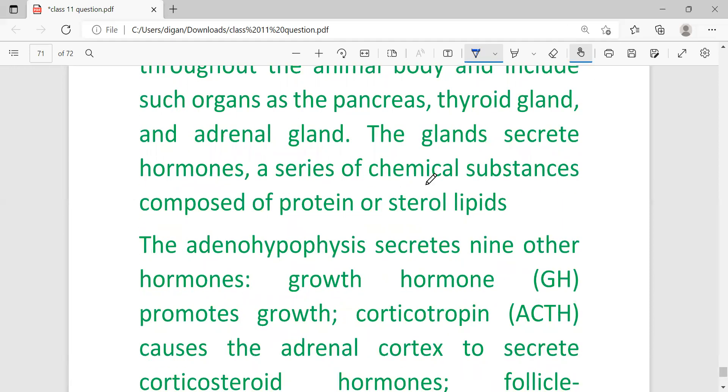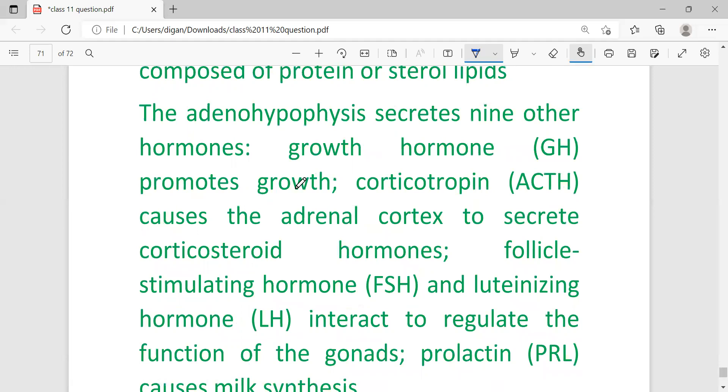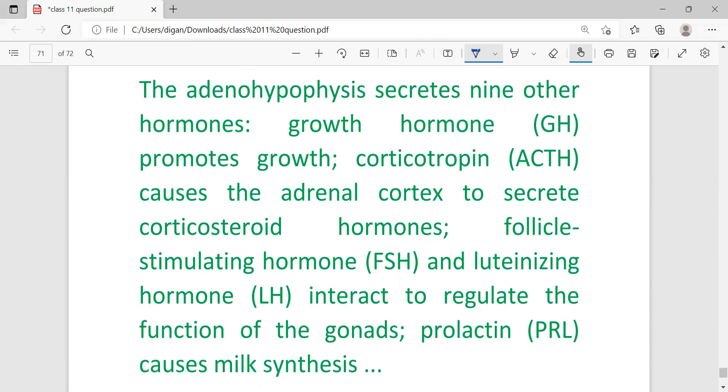Adenohypophysis secretes nine other hormones: growth hormone (GH), corticotropin (ACTH), follicle-stimulating hormone (FSH), luteinizing hormone (LH), prolactin (PRL). You have to remember the name of the hormones with their full forms. For example, GH hormone - a question may come asking what is the full form of GH hormone, then you have to write it is growth hormone which promotes growth.